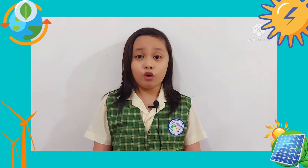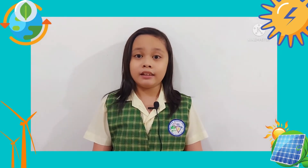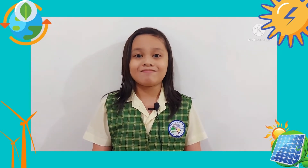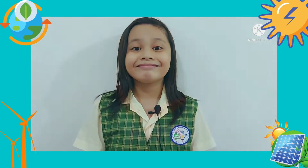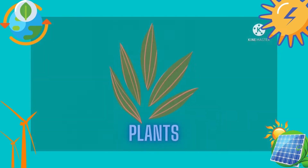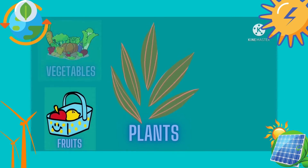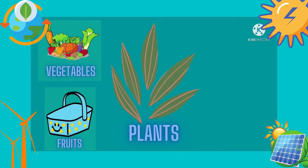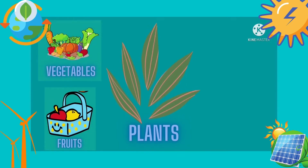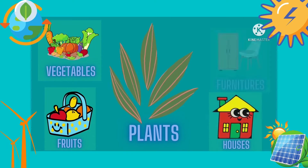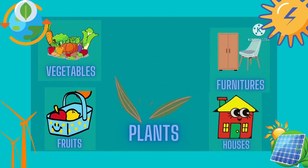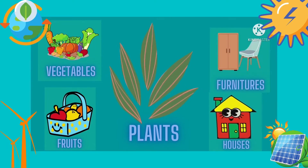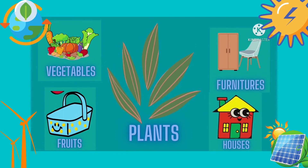Plants, animals, and bodies of water give us food and drinks. Plants give us fruits and vegetables. They also give us wood for building houses and for making furniture like tables,